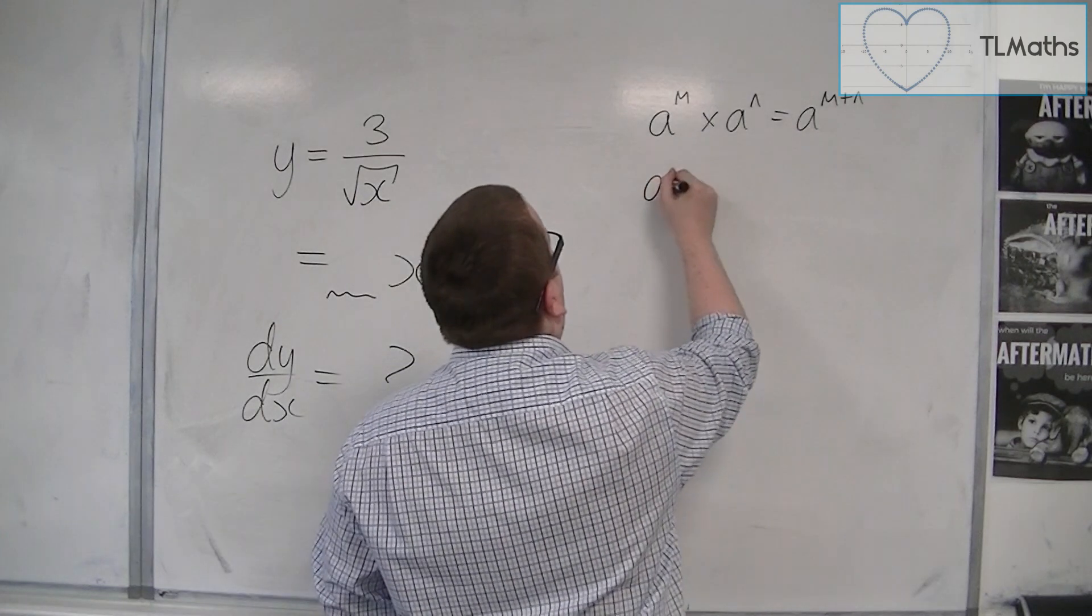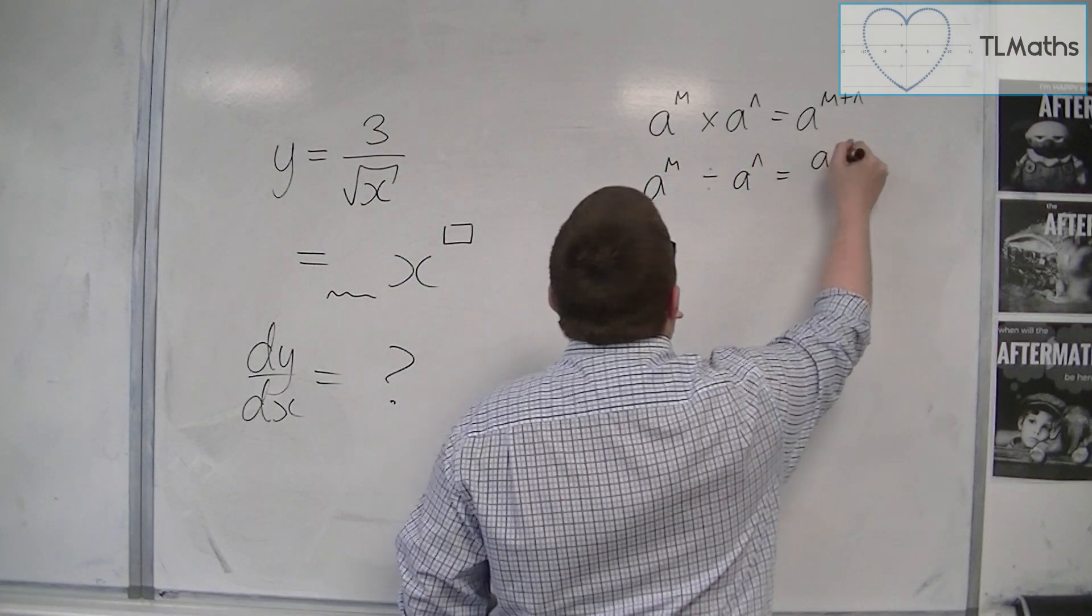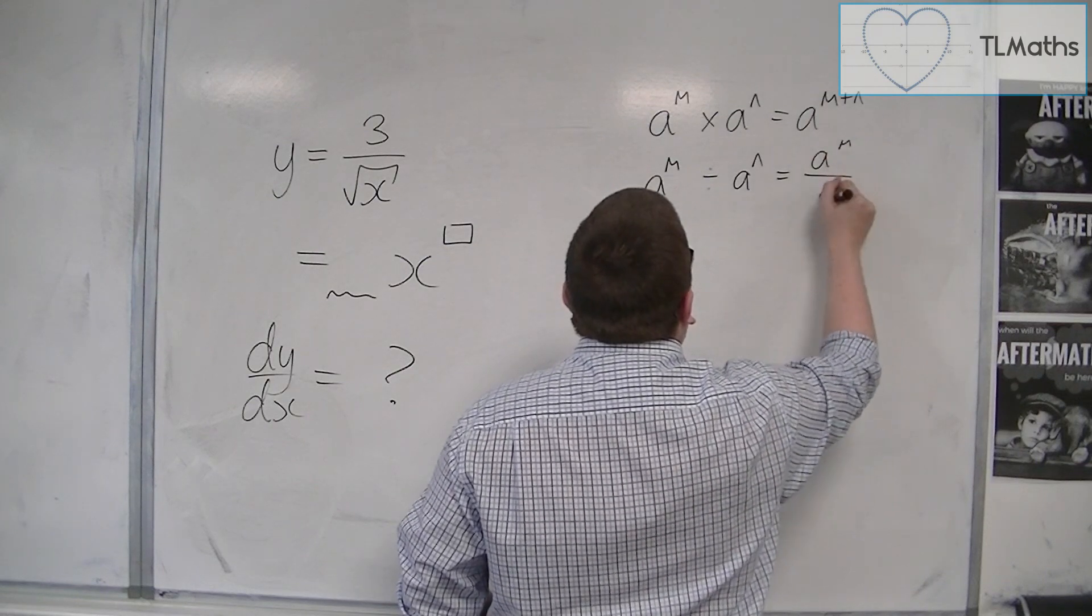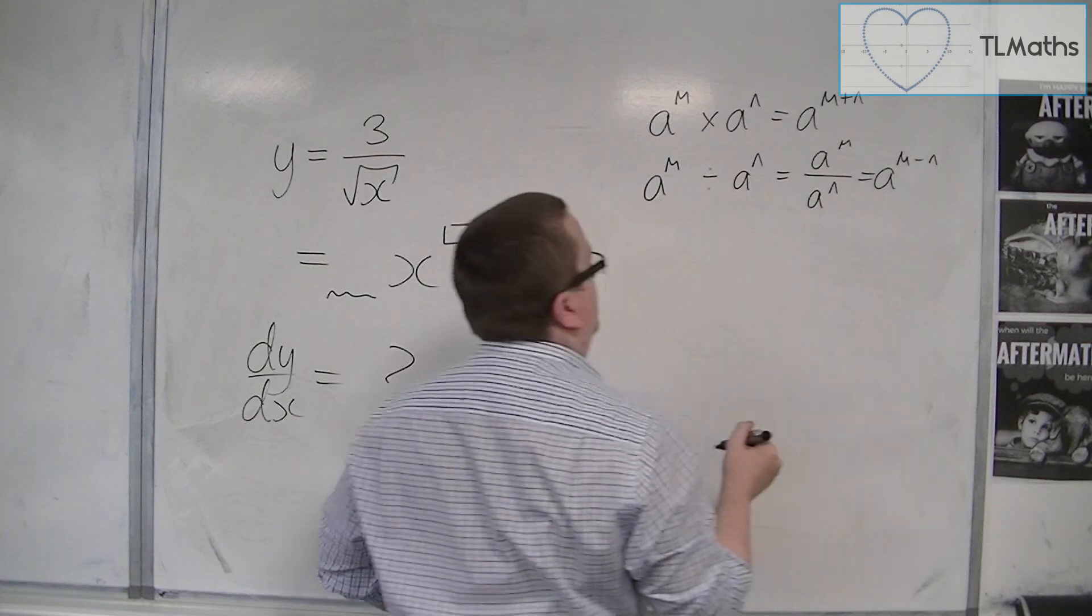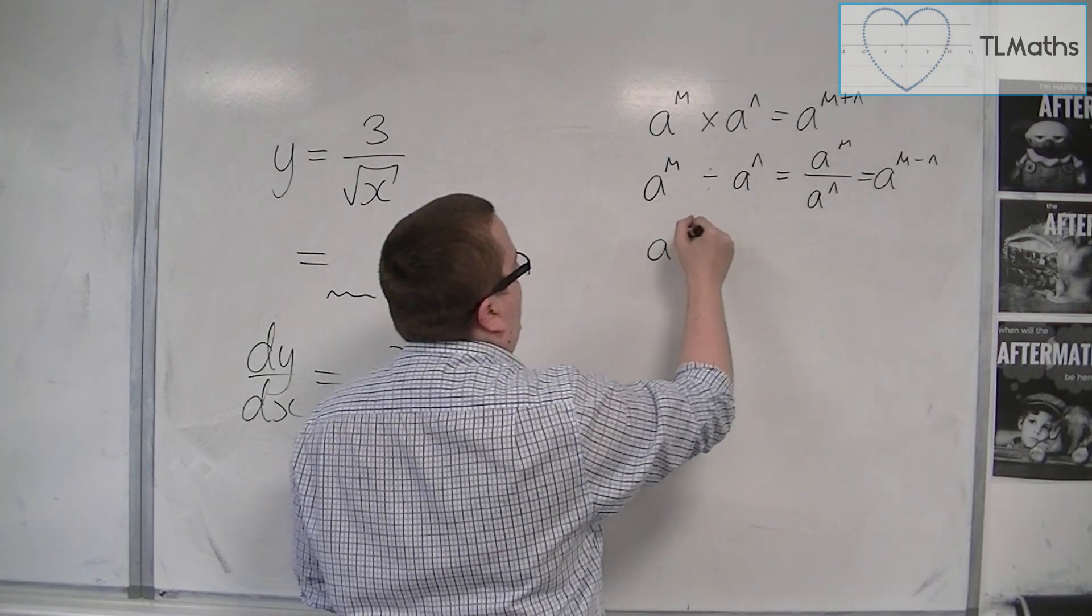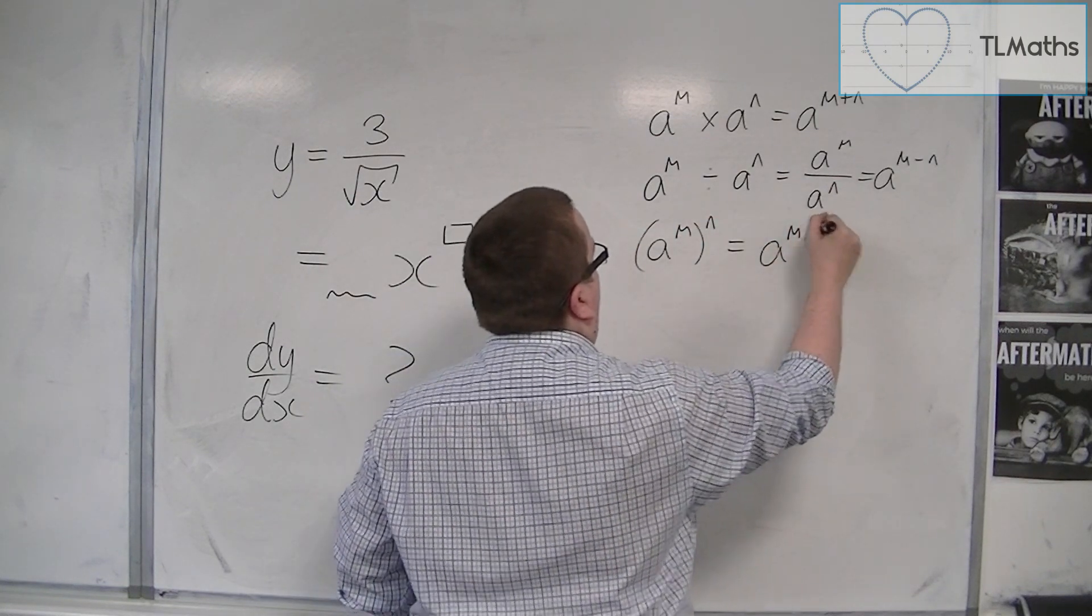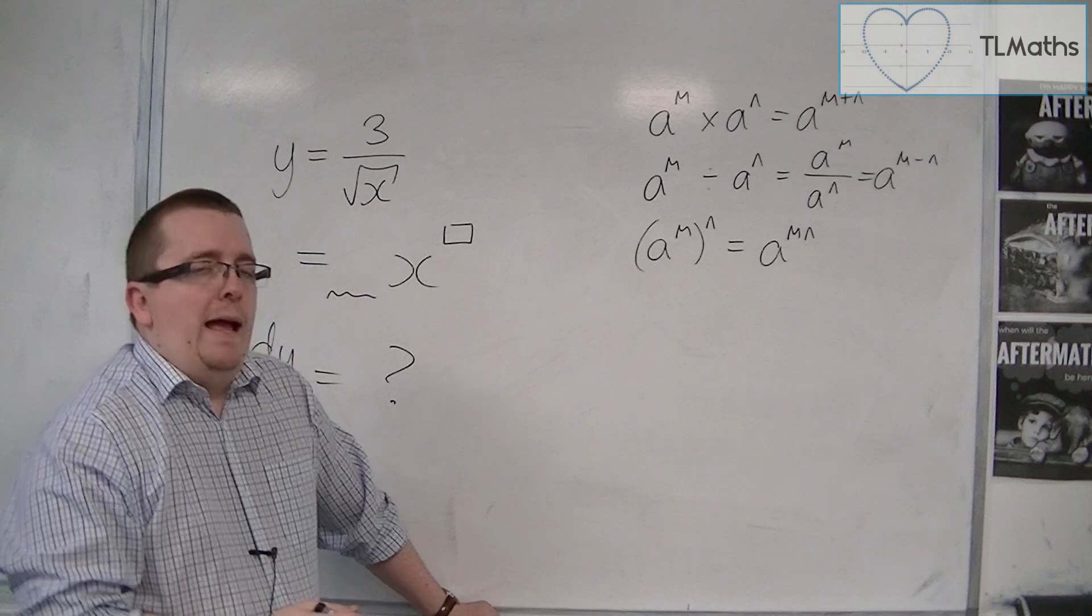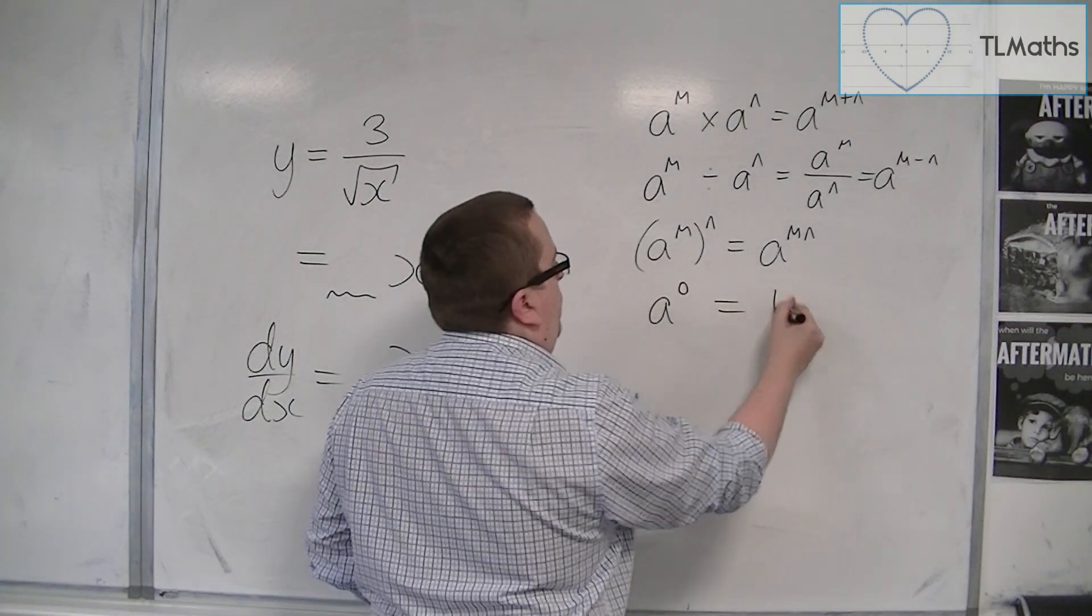And you've also got a to the m divided by a to the n, so you could write that as a to the m over a to the n. That's a to the m minus n. And you've got things like a to the m to the power of n - that's a to the m times n. And you've got things like a to the 0 is 1.